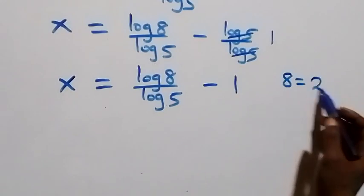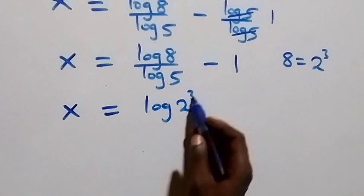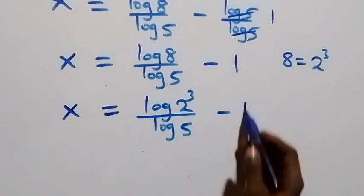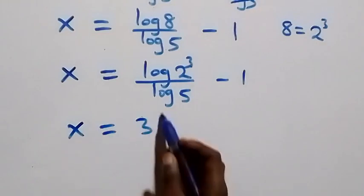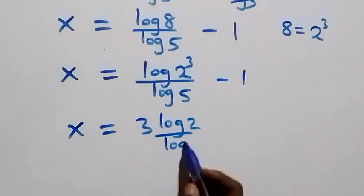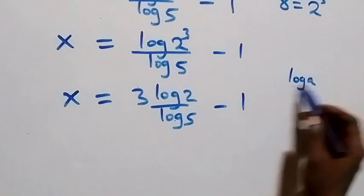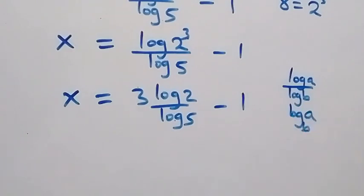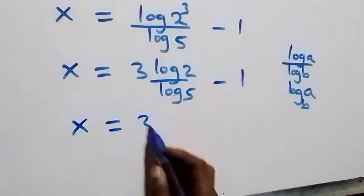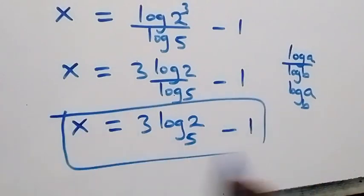We can write 8 as 2 times 2 times 2, which is 2 raised to power 3. So x equals log(2 raised to power 3) over log 5 minus 1. Applying the power law of logarithms, 3 comes out front: x equals 3 log 2 over log 5 minus 1. Applying change of base, log 2 over log 5 equals log base 5 of 2, giving x equals 3 log₅2 minus 1.